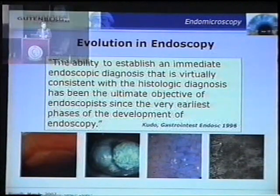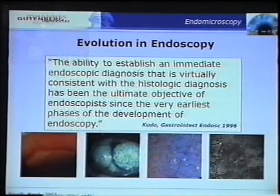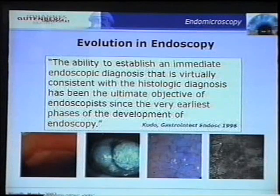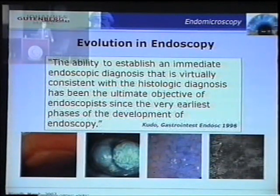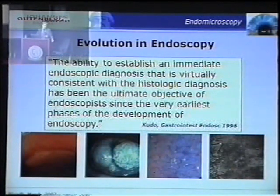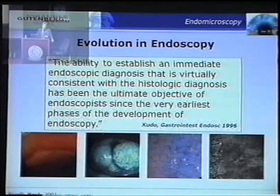We get good in vivo histology, but we also get good in vivo immunohistochemistry — at least in animals so far, as it is not yet permitted in humans. And we have certainly just seen the tip of the endomicroscopic iceberg.